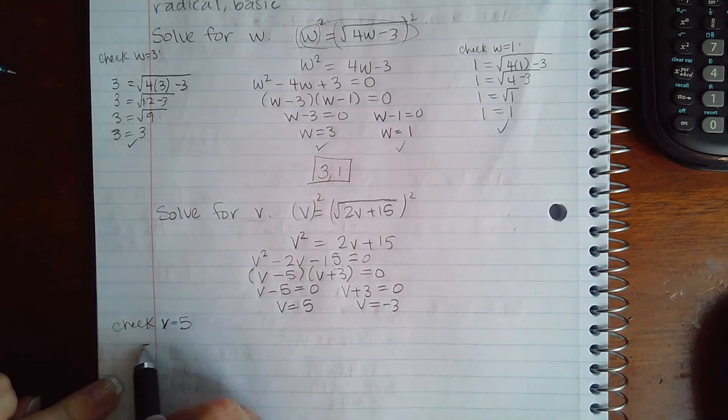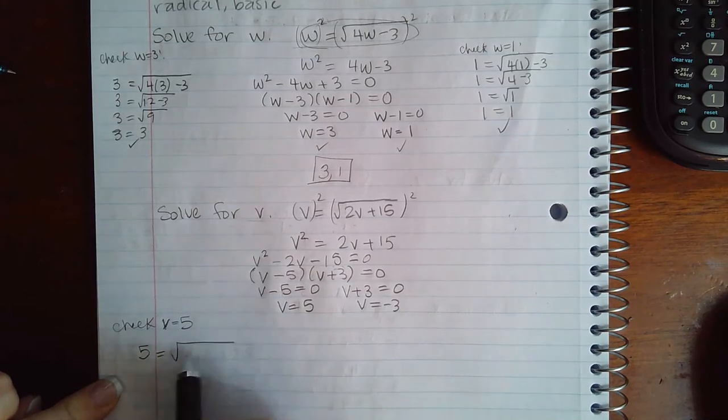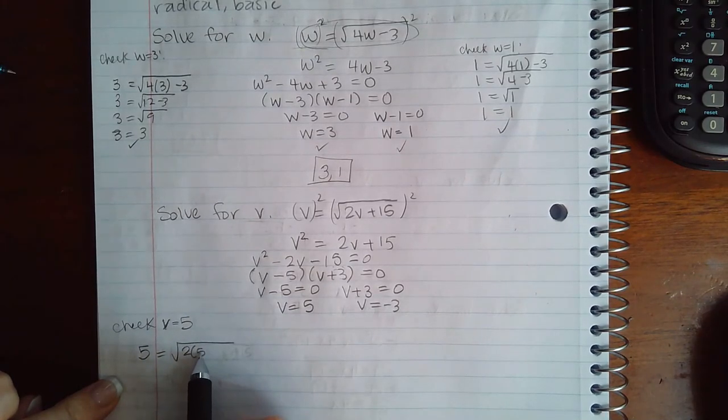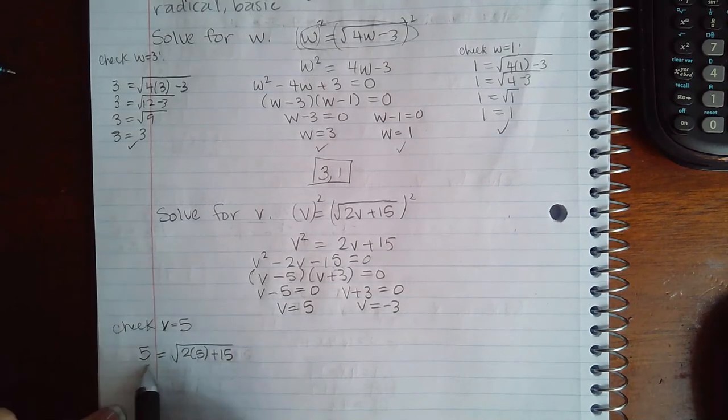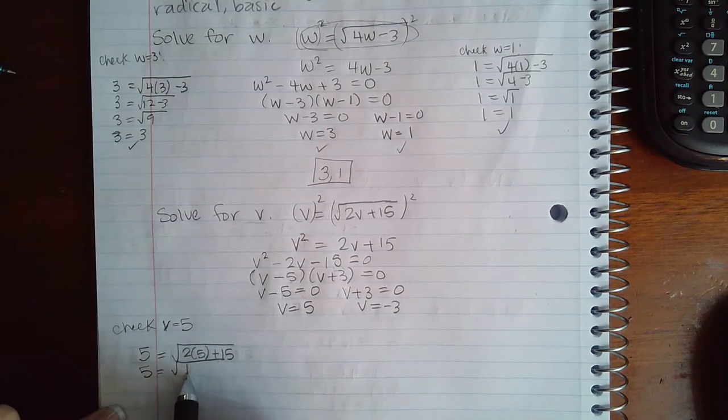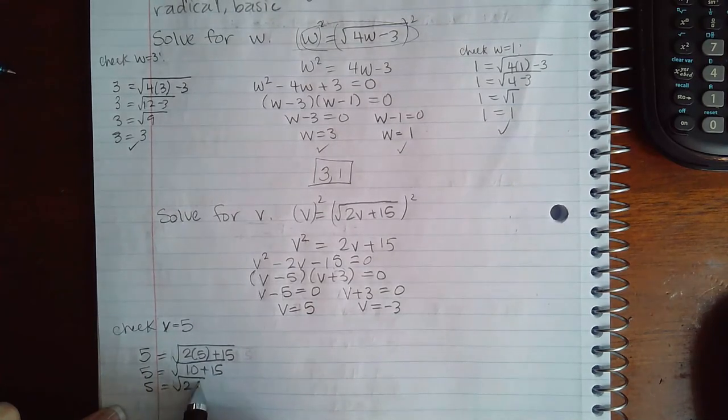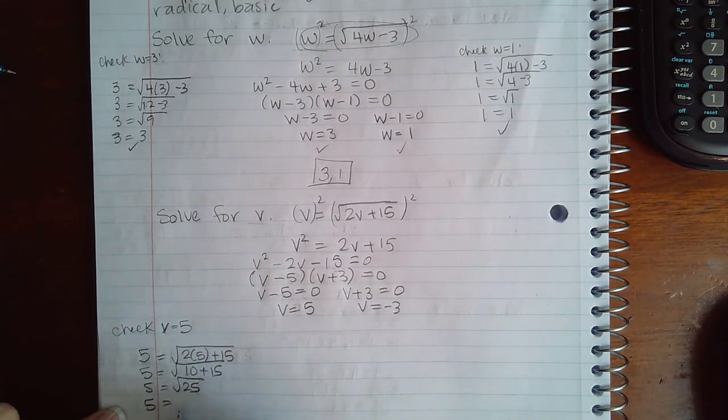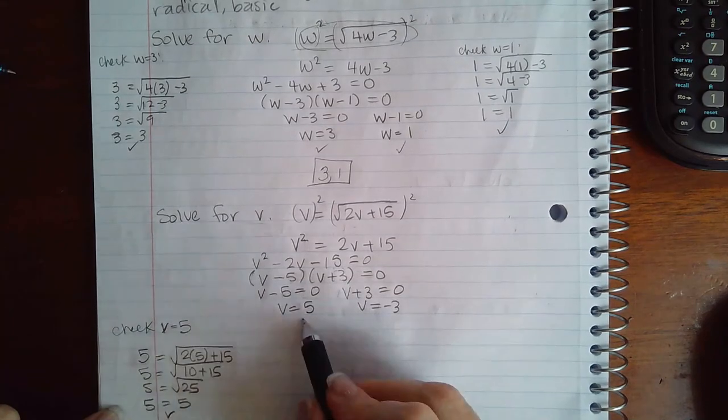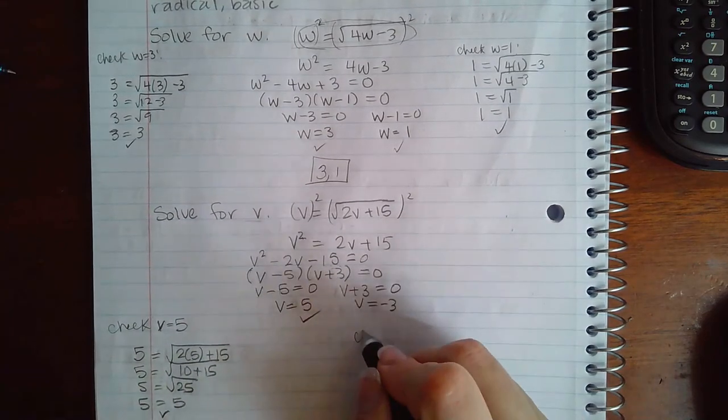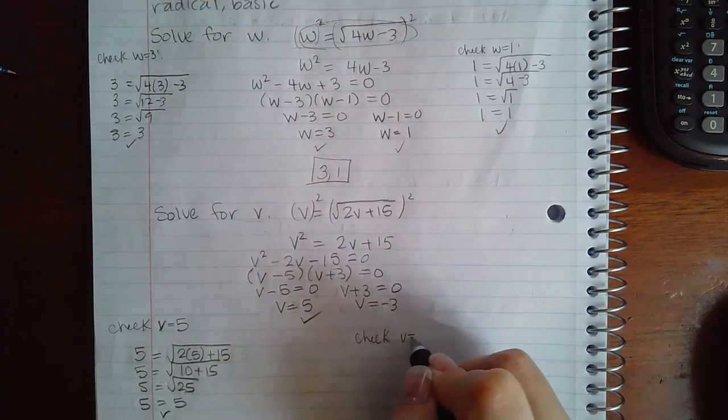So 5 equal to the square root of 2 times 5 plus 15. So then I get square root of 10 plus 15 which is the square root of 25, and the square root of 25 is 5. So this one does check out.